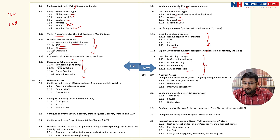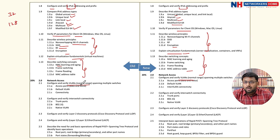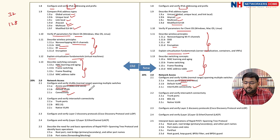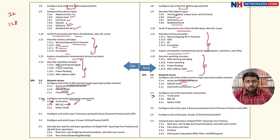Moving into Network Access, we cover VLANs (Virtual Local Area Networks) including access ports, data ports, voice ports, default VLAN, and inter-VLAN connectivity to enable communication between different VLANs. We then configure and verify inter-switch connectivity using trunk ports, the 802.1Q encapsulation tagging method, and native VLANs. Up to this point, the syllabi are approximately the same.